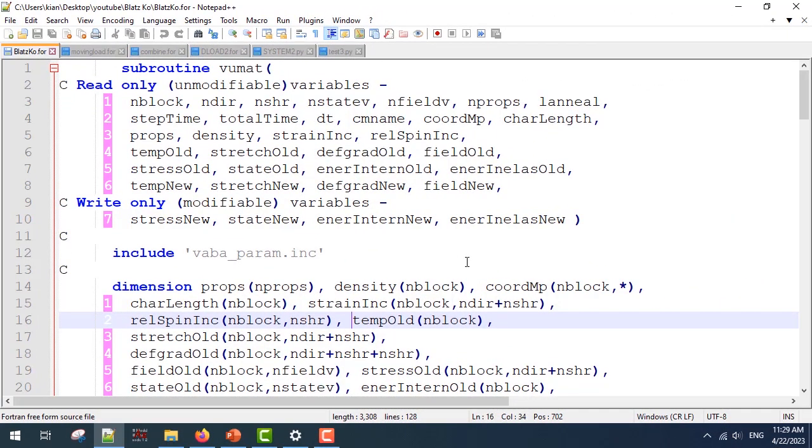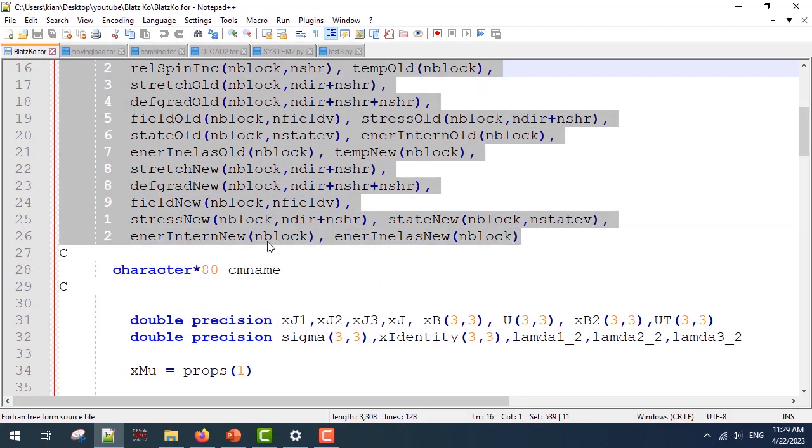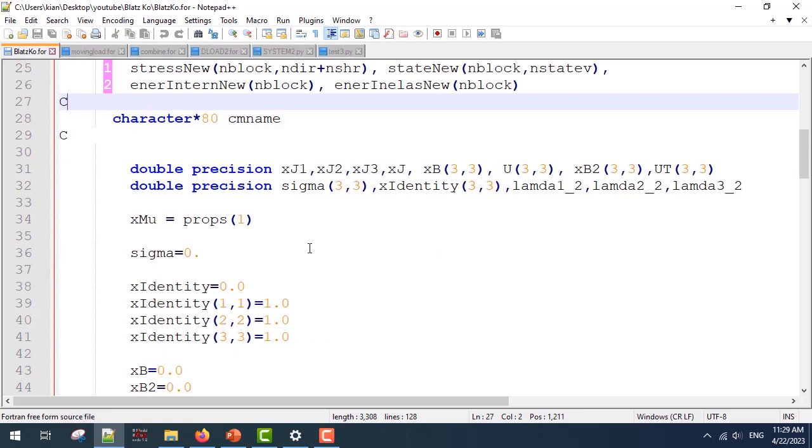Continuing with the VUMAT subroutine, as you know, this is the header and the dimensions. I have defined some parameters in double precision which I'm going to use. Xj, Xj1, Xj2, Xj3 are going to be used for the determinant of the deformation gradient.